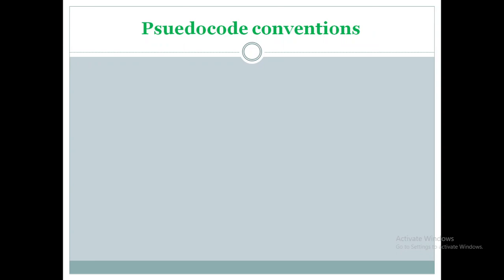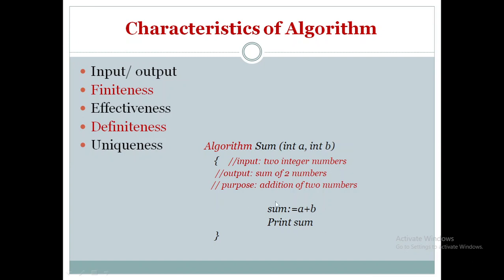Having understood the characteristics of an algorithm, the most important part is how to design one. The structure starts with the keyword 'algorithm', followed by a name — for example, 'Sum' — and its parameter list, such as 'int A, int B'. Then you use an opening and closing curly bracket as a block. Inside the block, you write comments describing the input, output, and purpose of the algorithm, followed by the logic.